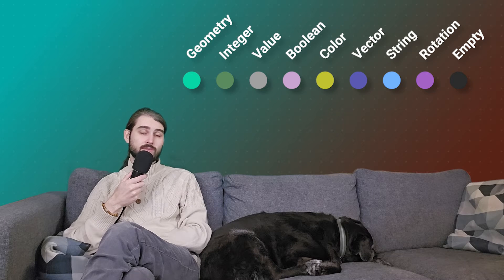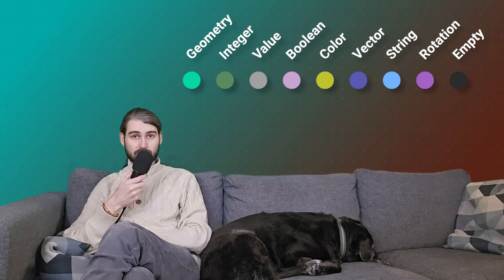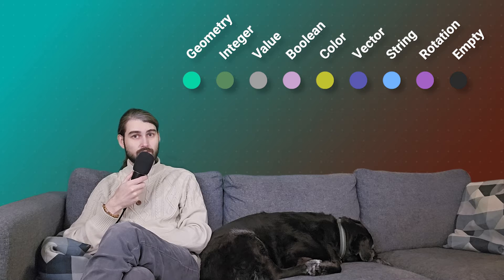We have circle sockets, which can operate on a single value and only a single value — they cannot work with fields.